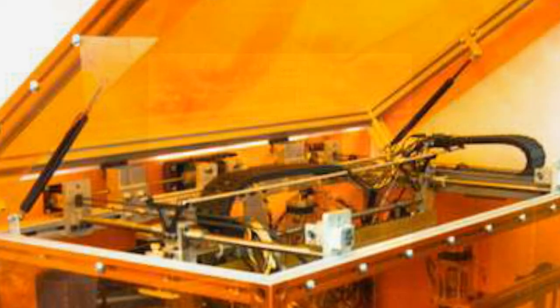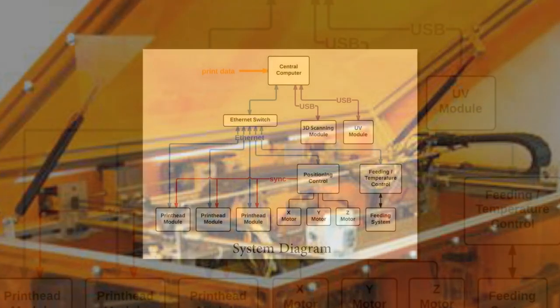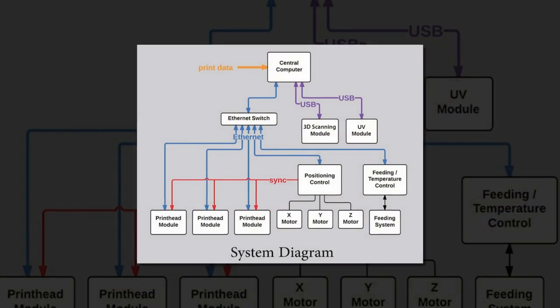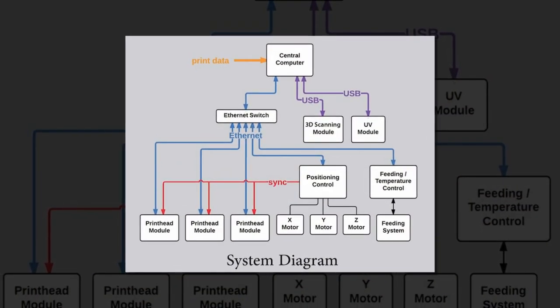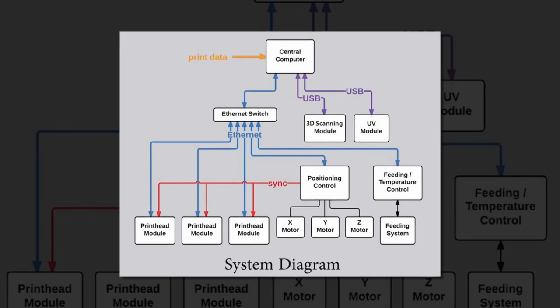The MultiFab system is the first 3D printer to use 3D scanning techniques from machine vision, which offers two key advantages over traditional 3D printing.